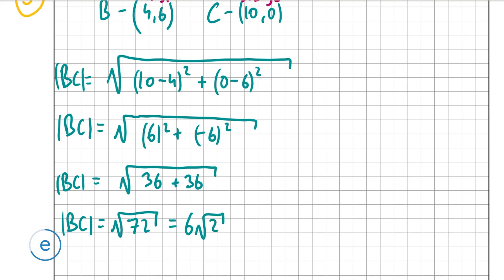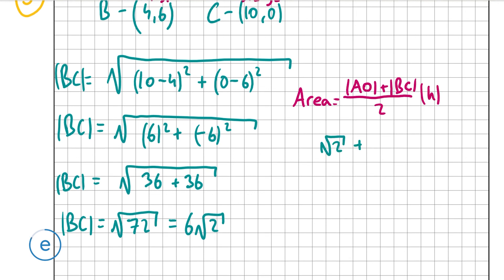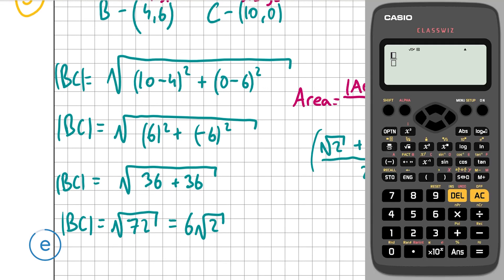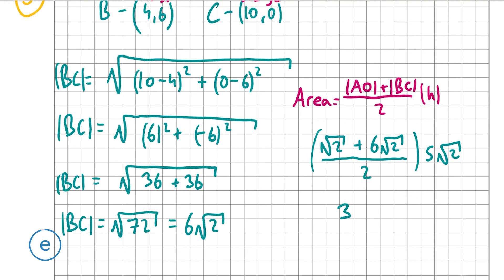Now the area of the trapezium is (OA + BC) / 2 × h = (√2 + 6√2) / 2 × 5√2. Putting this into the calculator gives 35. So the area of the trapezium OABC is 35 square units. That's the answer for part E, the final part of the question. Thank you very much for watching and I hope I helped.